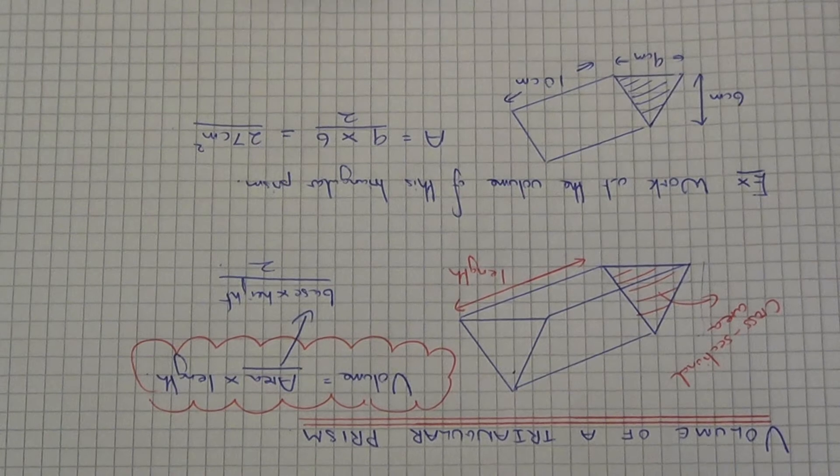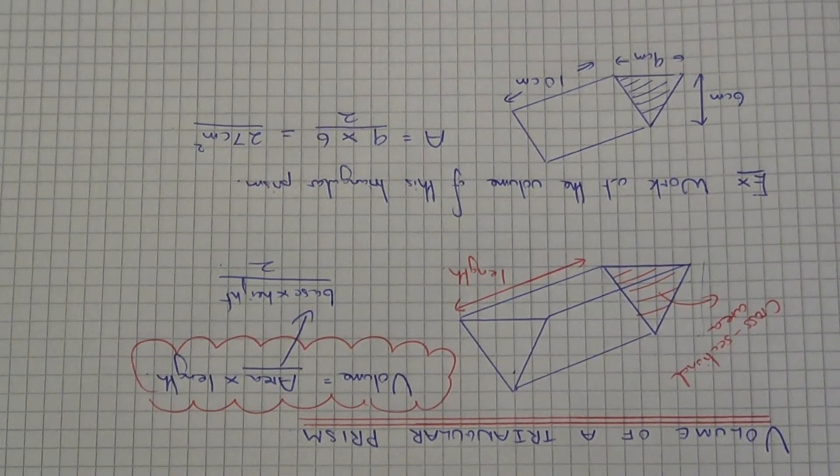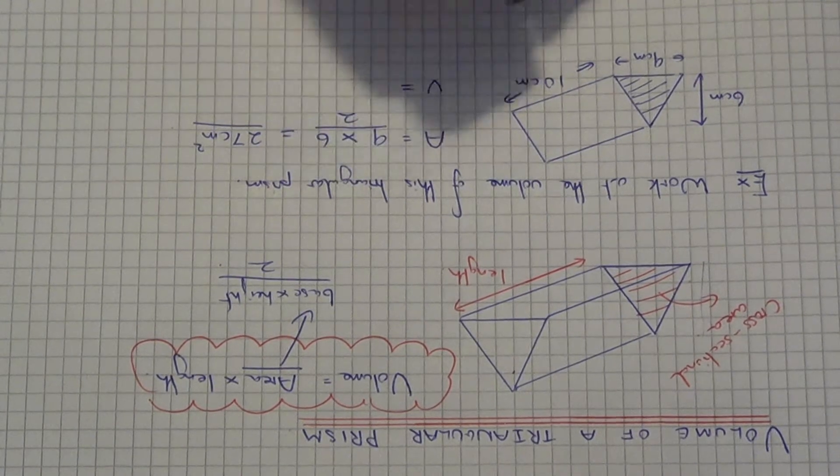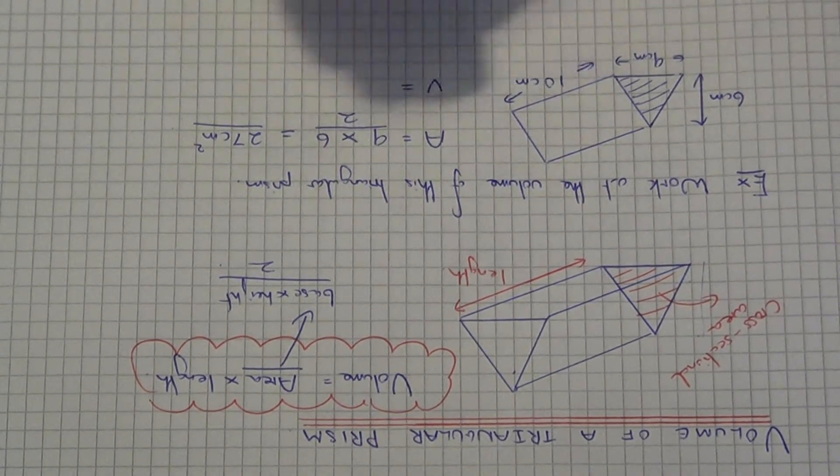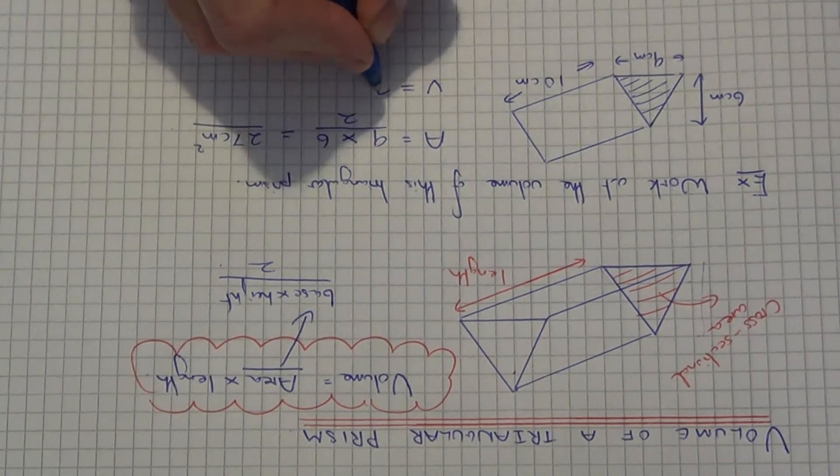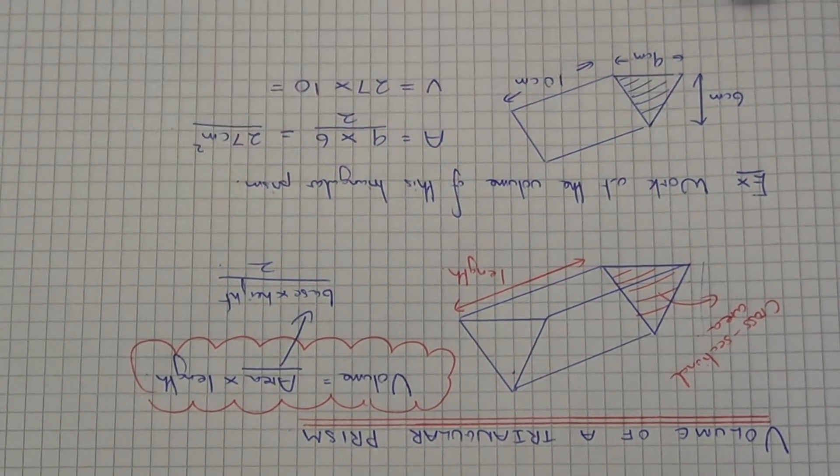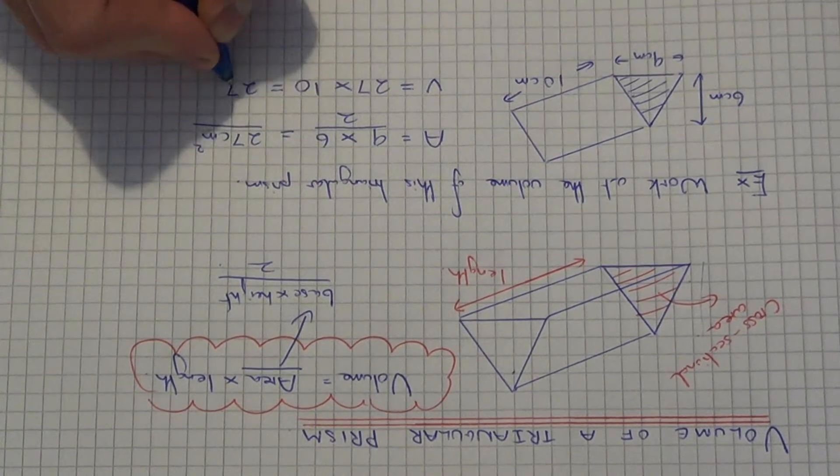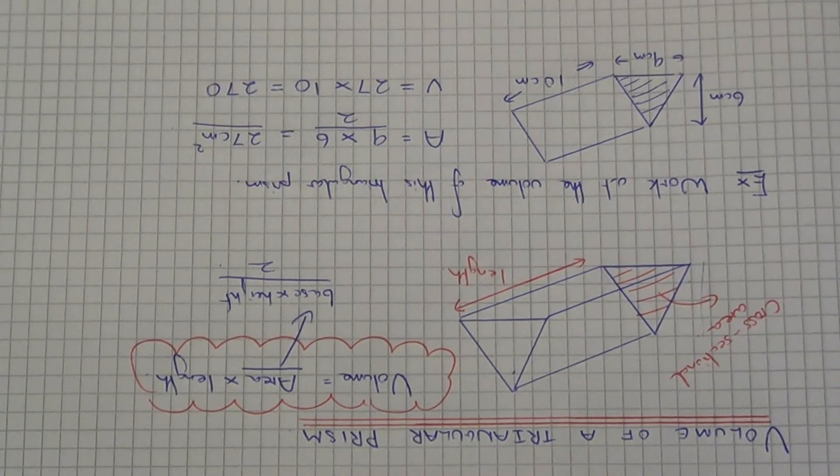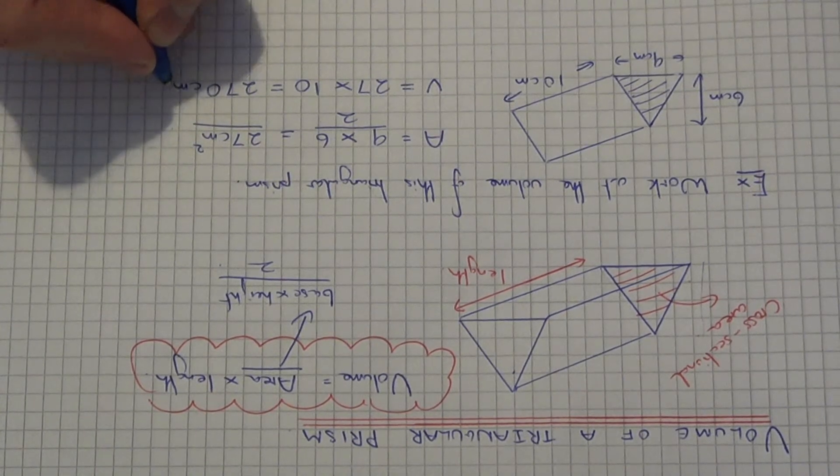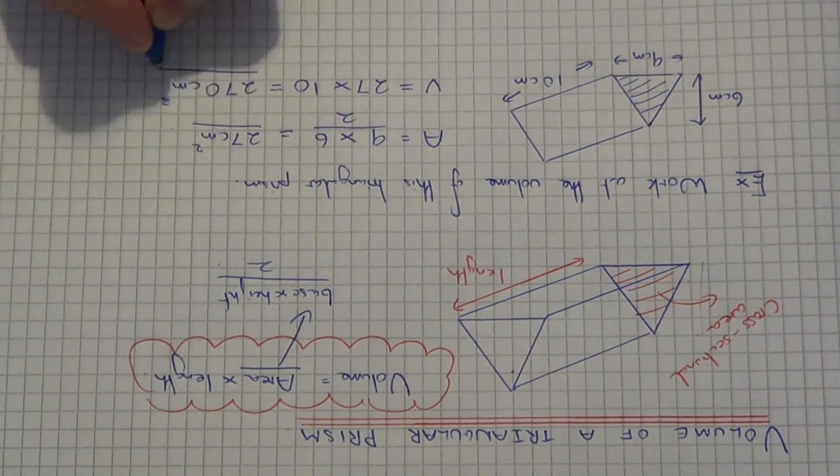Once we have this, we can then multiply this answer by the length of the prism. The length of the prism is 10 centimetres, so we do 27 multiplied by 10. This will give us 270. Just remember to put the units on the end, since it's a volume question. We need to put centimetres cubed.